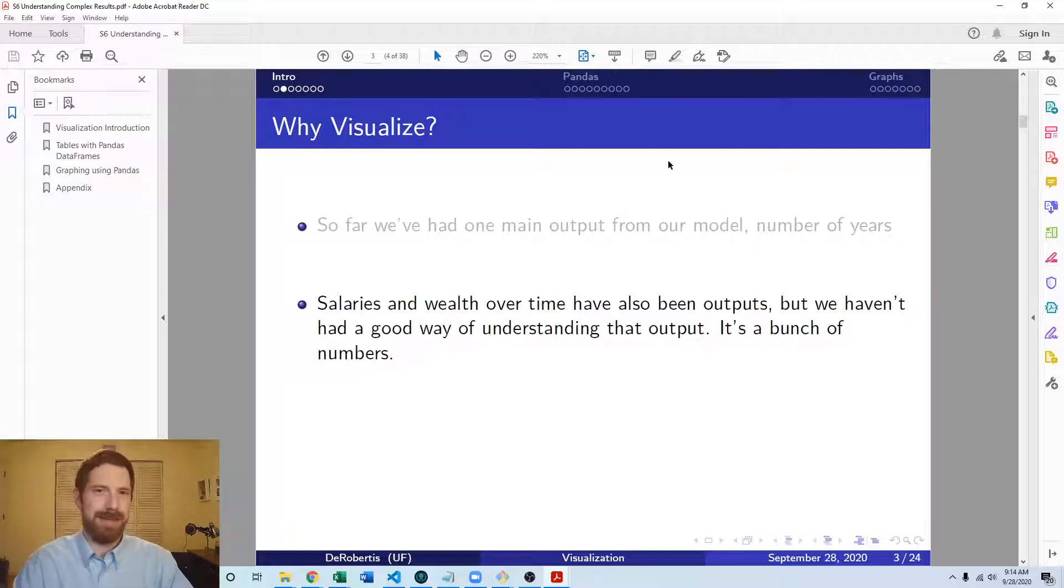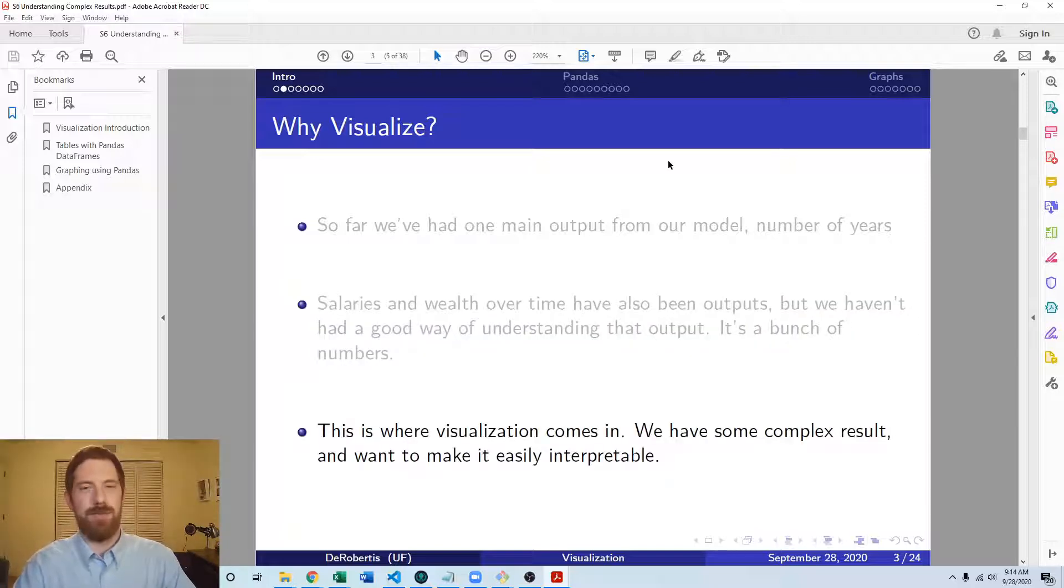But we've also had salaries over time and wealth over time as outputs, but each of those represents a lot of different numbers. It's difficult to present that in a way that someone can very easily understand what it looks like over time at a quick glance.